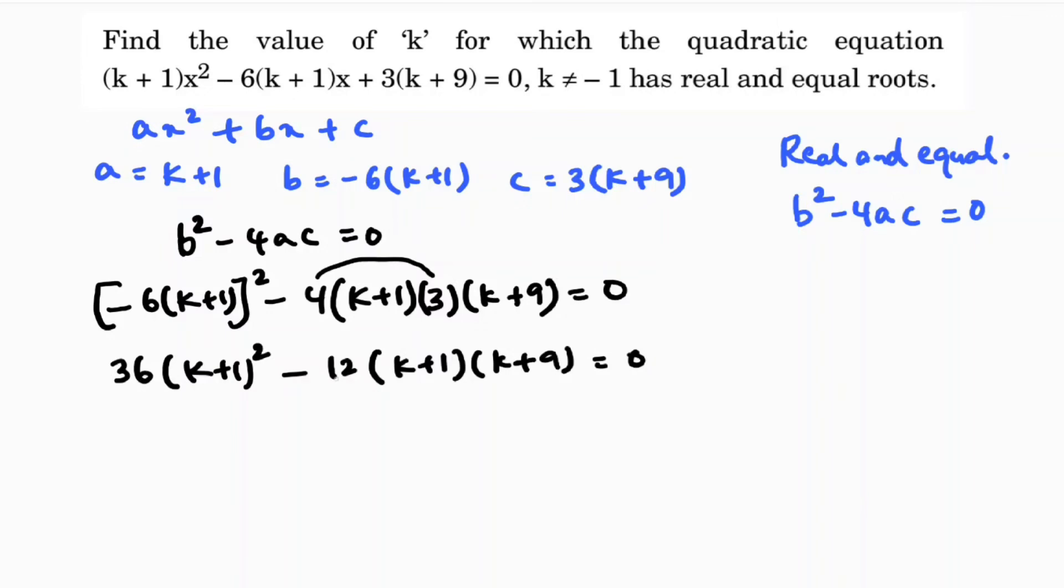Since we have 36 and 12, we can factor out 12: 12(k+1)[3(k+1) - (k+9)] = 0. Here, 12 and (k+1) are common factors, leaving 3(k+1) - (k+9) = 0.